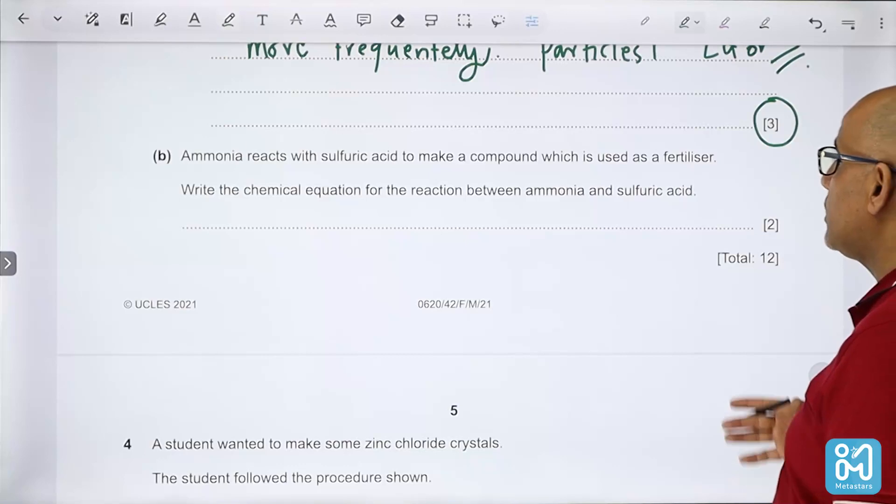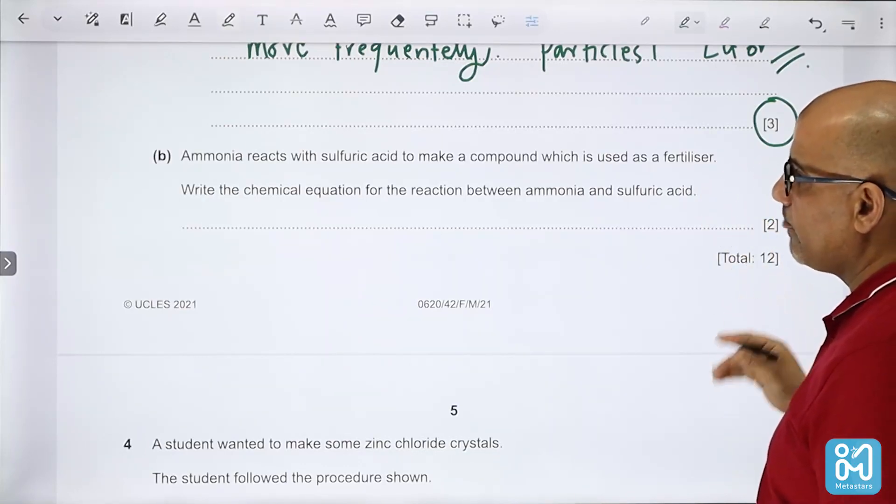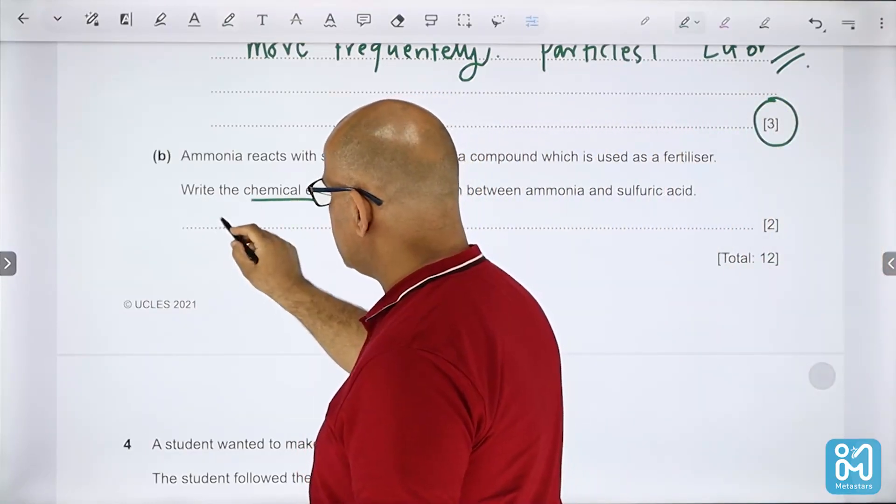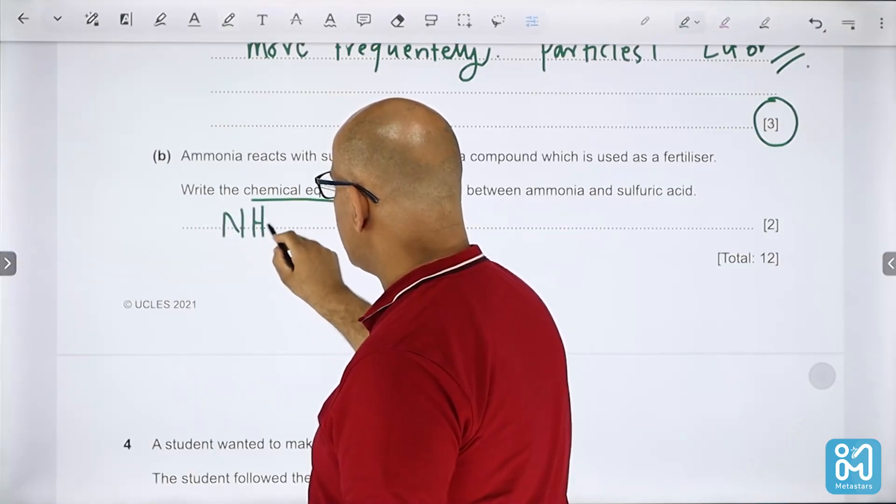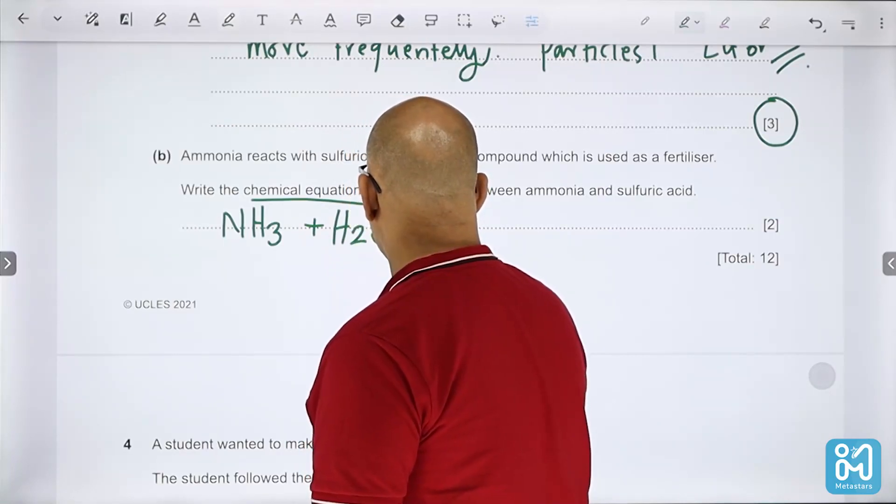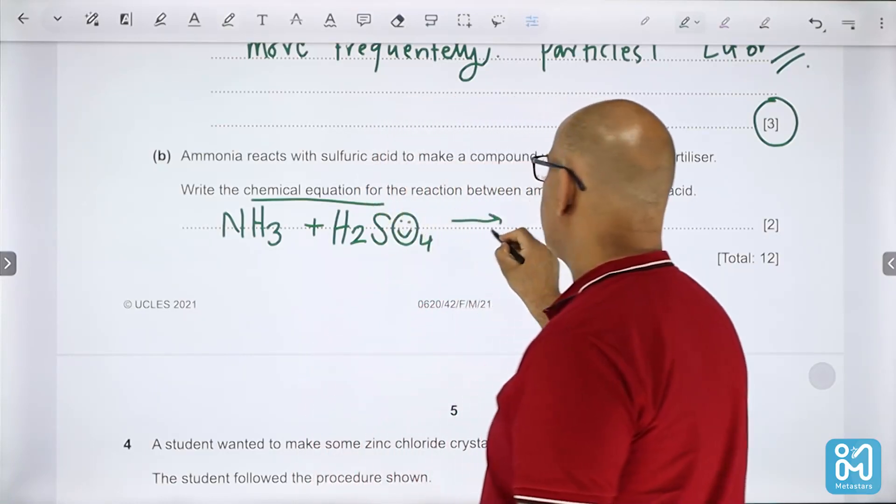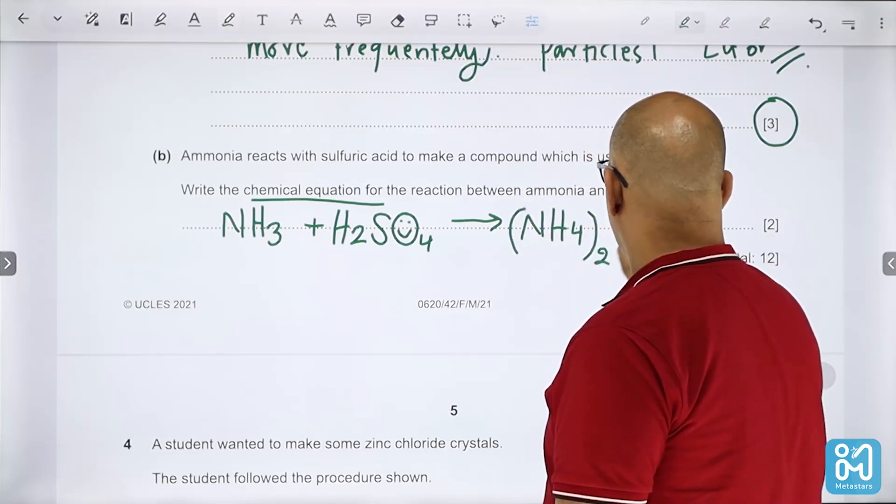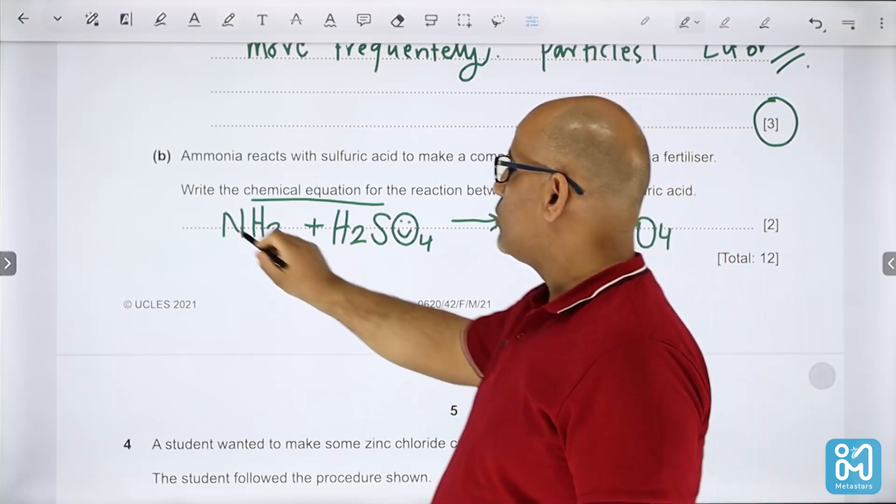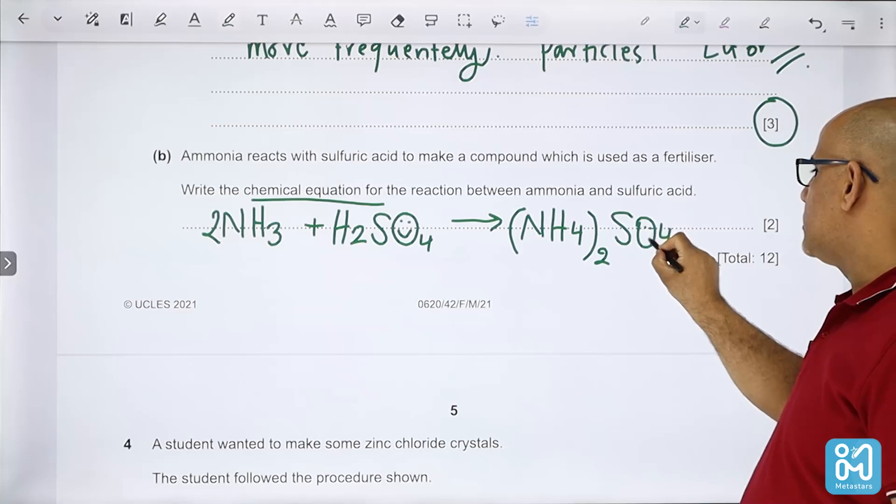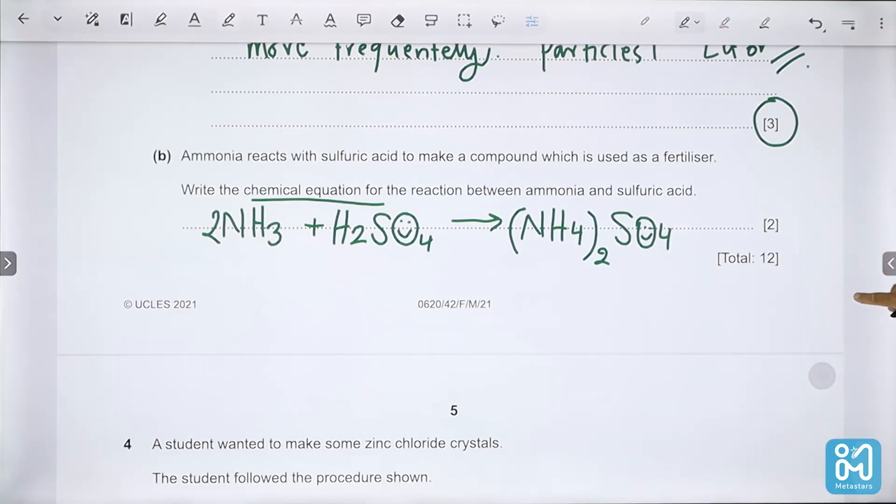Ammonia reacts with sulfuric acid to make a compound which is used as a fertilizer. Write the chemical equation for the reaction between ammonia and sulfuric acid. 2NH3 + H2SO4 gives (NH4)2SO4. You shall balance your equation - you have eight hydrogens, two nitrogens, and one sulfate. This is your fertilizer.